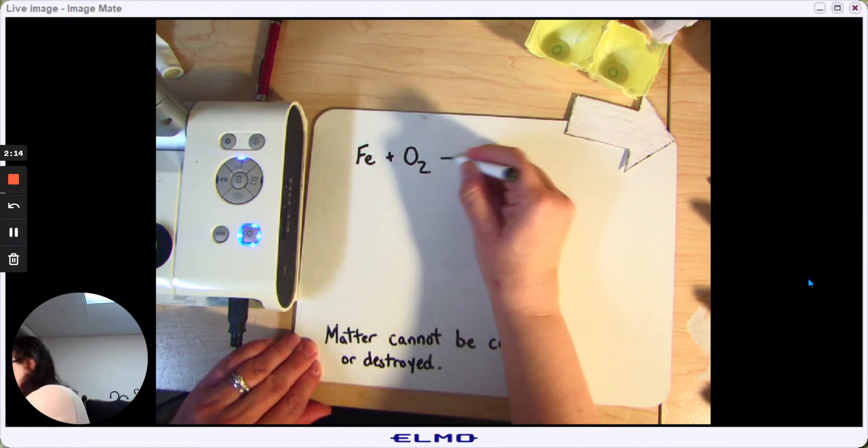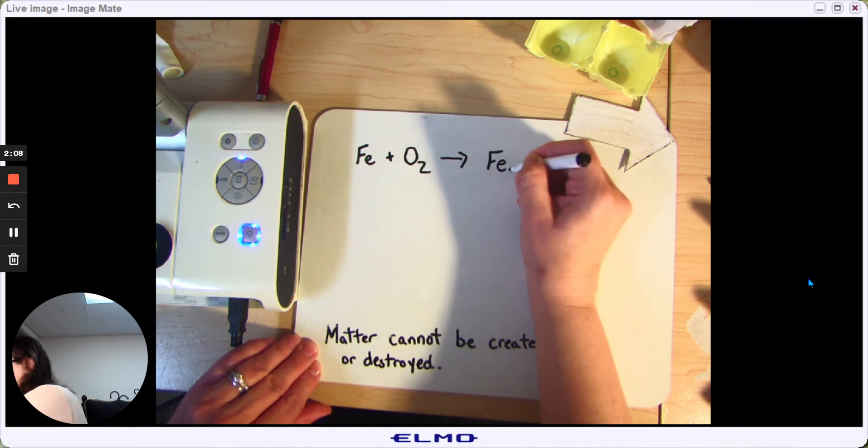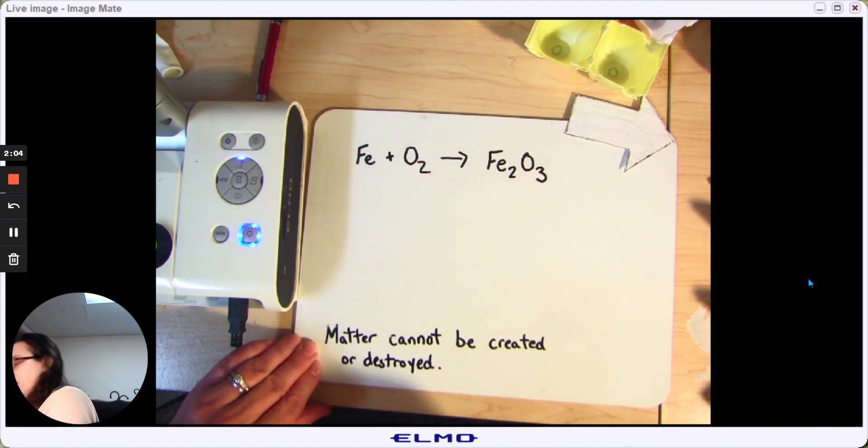And it becomes the rust molecule. And a rust molecule has two irons and three oxygen atoms.